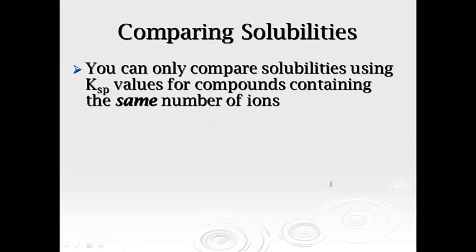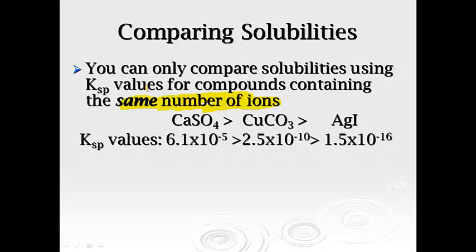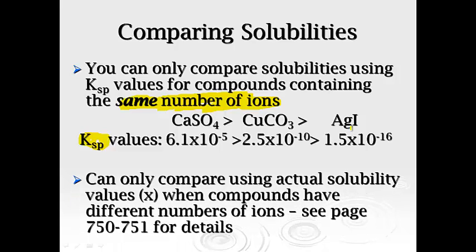Now if you can compare, you can only compare solubilities using Ksp values for compounds containing the same number of ions. It's not an across-the-board comparison because, as we know, the number of ions is going to change it. For example, calcium sulfate is going to be larger than—so all of these all give off 2 ions. So for Ksp values here, calcium sulfate is more soluble than copper 2-carbonate that's more soluble than silver iodide. So you can compare them when it has the same number of ions, but you can only compare using actual solubility values when the compounds, or the x's, have a different number of ions. If you look on page 750 to 751, that'll give you a little bit more detail on that.